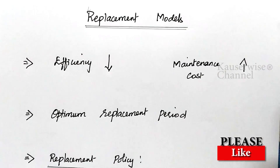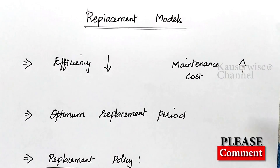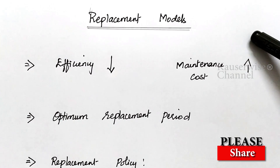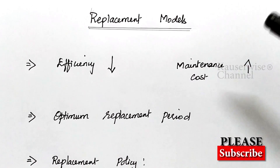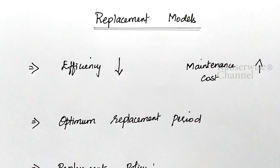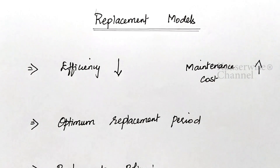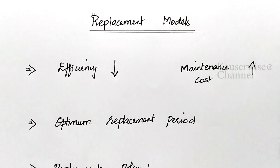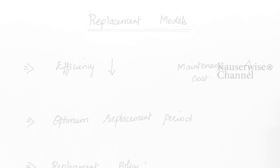Hi, welcome to my channel. In this video we are going to see replacement models in operation research. Before we see the problem, please subscribe to this channel and hit the bell icon to get further notifications of my new uploads. Now let us see what the replacement model is briefly, then we will see the problem. Replacement model is used in the decision-making process of replacing a used equipment or asset with a substitute — mostly a new equipment or asset — for better usage.